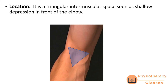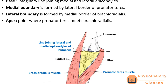What is cubital fossa and where exactly is it located? Cubital fossa is a triangular intermuscular space which is seen as a shallow depression in front of the elbow. Now let us see which structures form the boundaries of the cubital fossa.